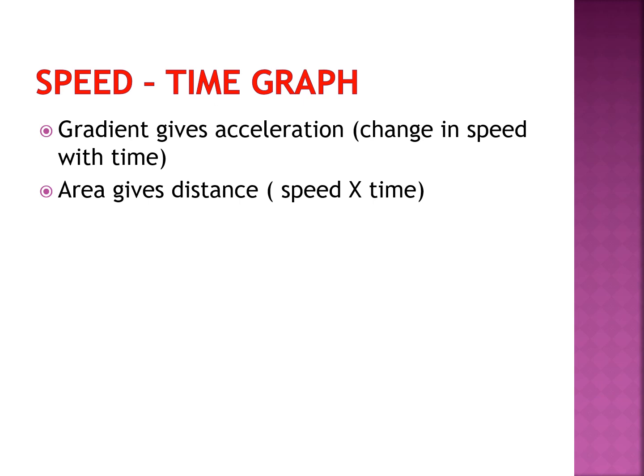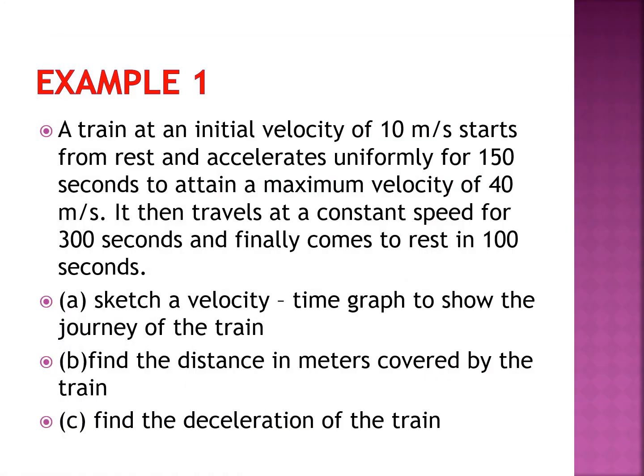The area under the speed-time graph could be a definite shape — a triangle, a rectangle, or a mixture of shapes. If it is a triangle you use the triangle area formula; if a rectangle you use that formula; if it is a mixture you divide into several shapes to get the total distance. Now, try this example: a train at an initial velocity of 10 m/s accelerates uniformly for 150 seconds to attain a maximum velocity of 40 m/s, travels at constant speed for 300 seconds, then comes to rest in 100 seconds. Sketch a velocity-time graph and find the distance covered and the acceleration.